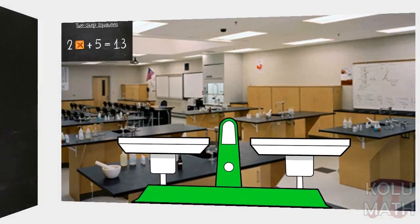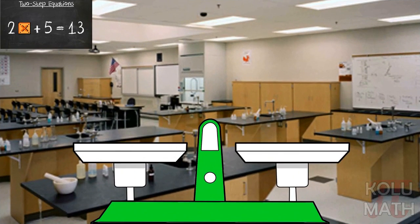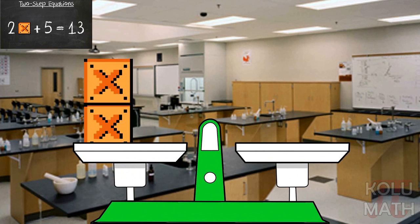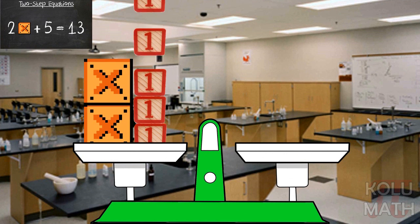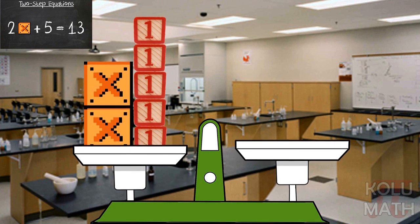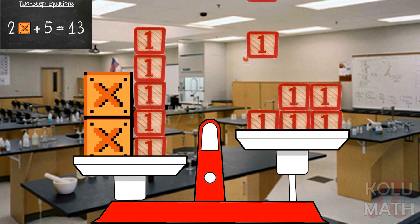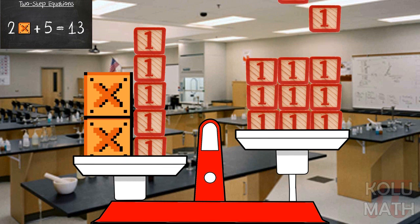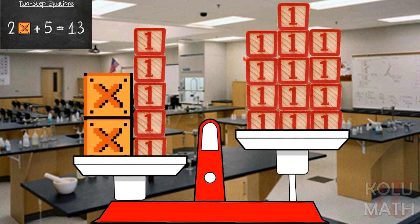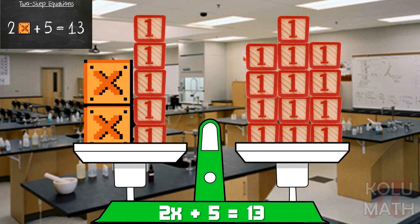Let's take a look at the scale. So let's model. We've got 2x's over here plus 5 ones. And then on this side, we've got 13 ones. Okay, so that doesn't look too bad.